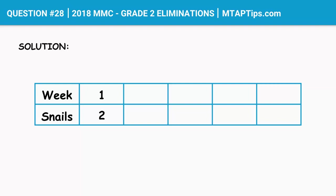At the end of the second week, Linda had 4 snails. Then in the third week, Linda had 8 snails. But the question was, how many snails will she have at the end of the fifth week?